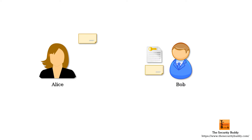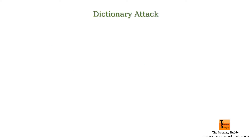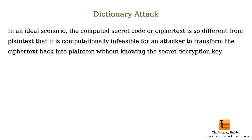And the reverse process is known as decryption. In decryption, the cipher text is transformed back into plain text with the help of a decryption key. Now in an ideal scenario, the computed secret code or cipher text is so different from the plain text that it is computationally infeasible for an attacker to transform the cipher text back into plain text without knowing the secret decryption key.